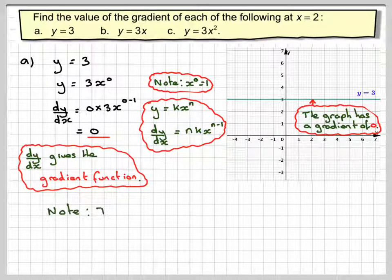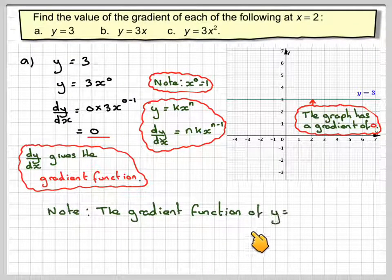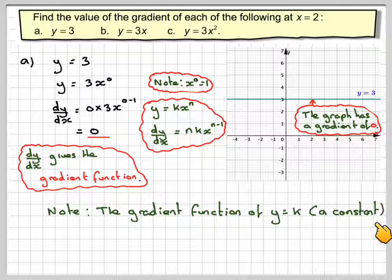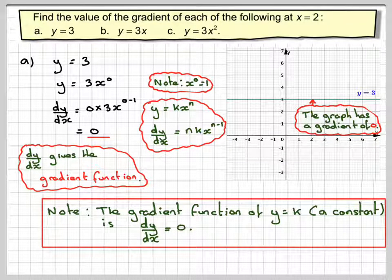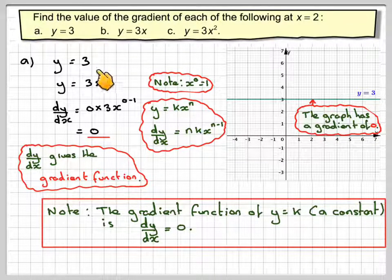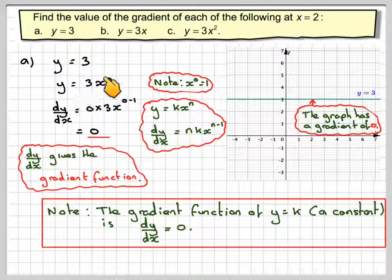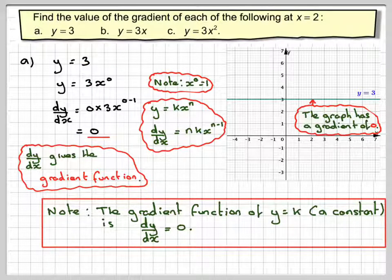Note that the gradient function of y is equal to k — any constant — will be equal to 0. So when you differentiate a constant, you will always get 0.